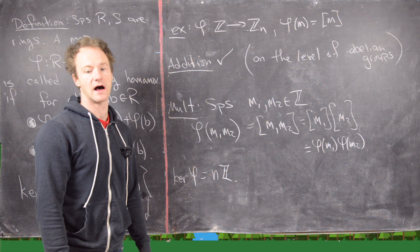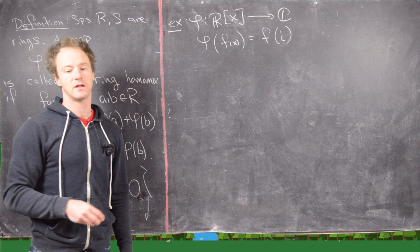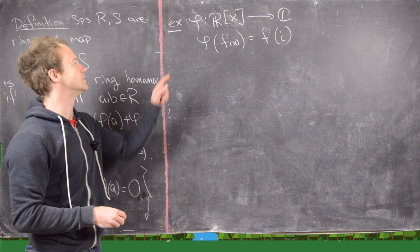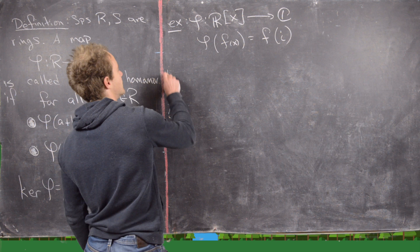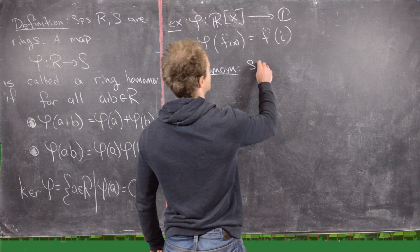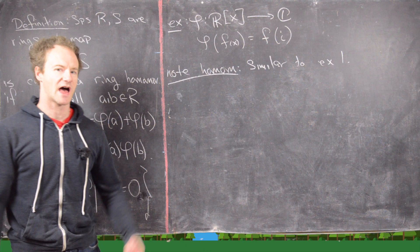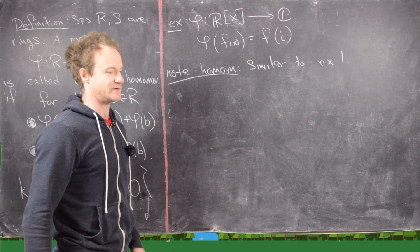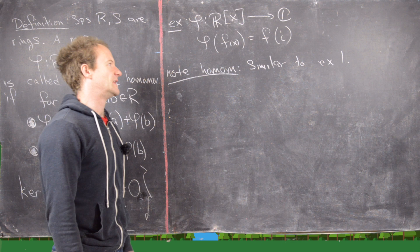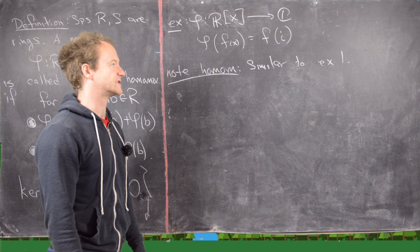The next example takes polynomials with real coefficients into the complex numbers, evaluating at i. This is a homomorphism in a very similar way to our first example — it's the evaluation homomorphism, but evaluating at i rather than √2. The evaluation homomorphism holds when evaluating at anything.